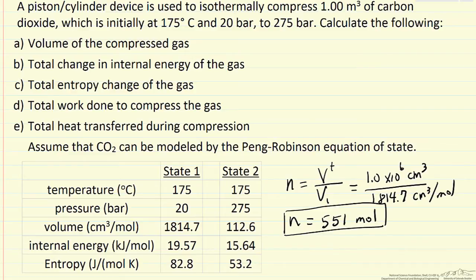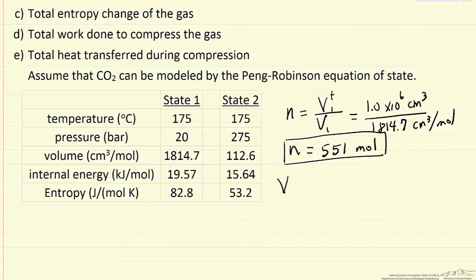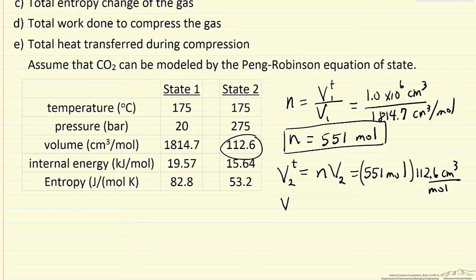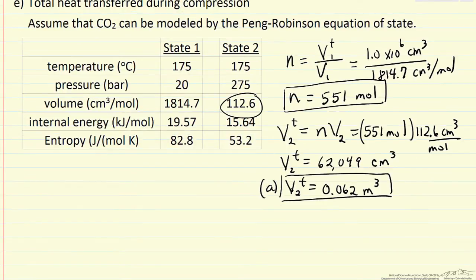I'm going to convert from cubic meters to cubic centimeters to be consistent with the value from the spreadsheet. So the number of moles initially, and the number of moles finally, is 551. We need that value to calculate the final volume. The total final volume would be the number of moles times the volume per mole: 551 moles times 112.6 cubic centimeters per mole. I converted it back to cubic meters and wrote down two significant figures.